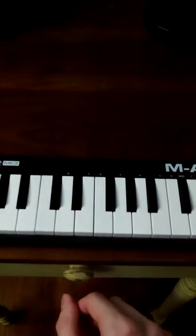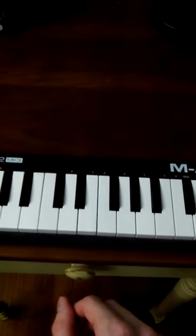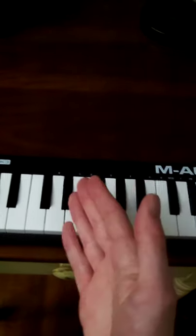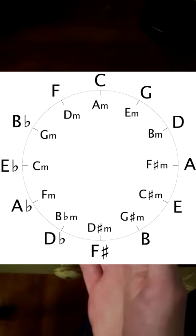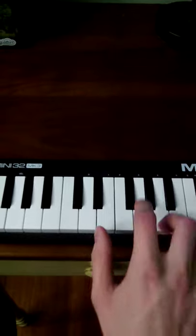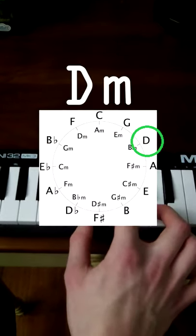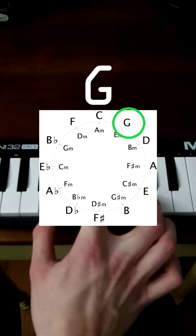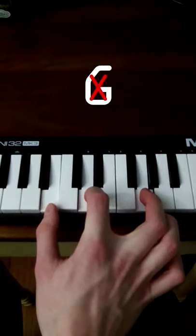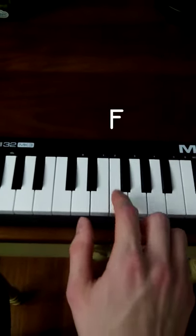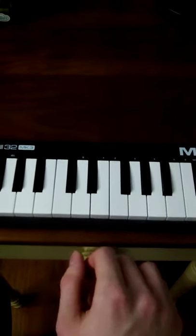Fear not, for we can get out of the situation using our trusty circle of fifths. Usually, we're supposed to move counterclockwise in the circle of fifths to release tension in the chord progression. However, if we try that on our major-minor change, it doesn't really work, because this note wants to keep going down to this note.